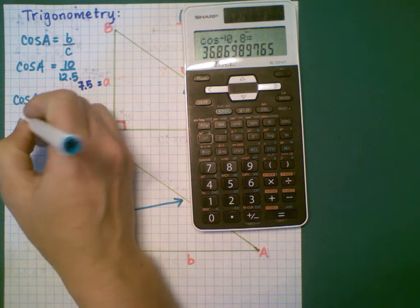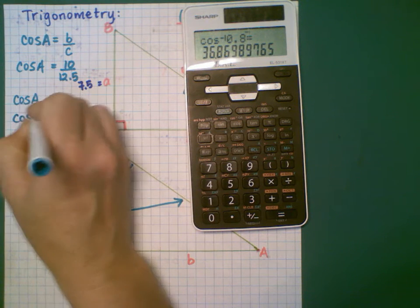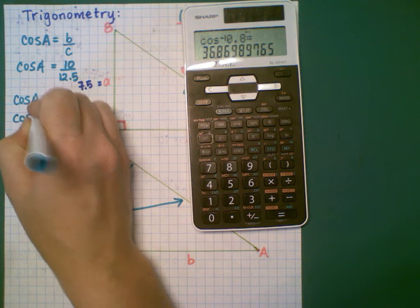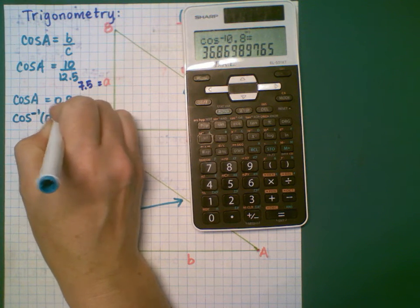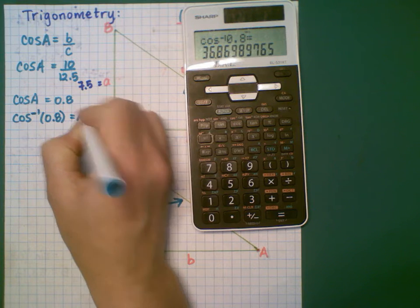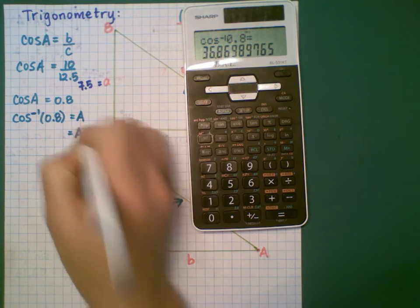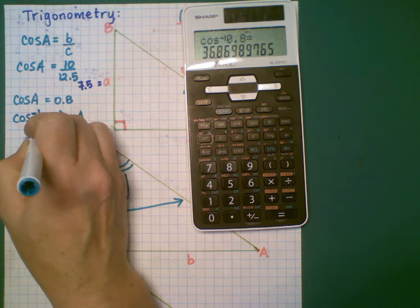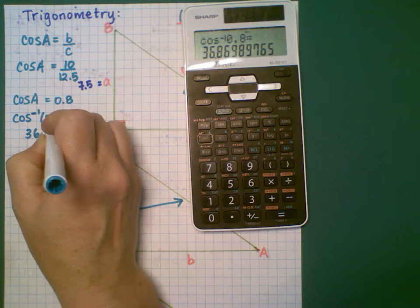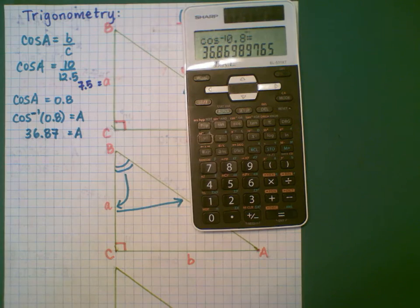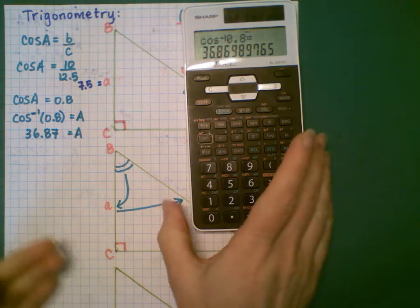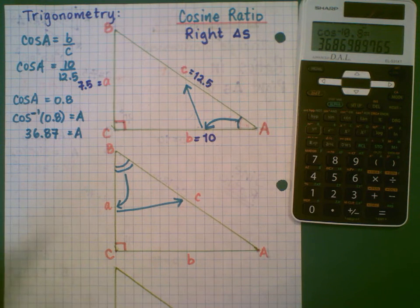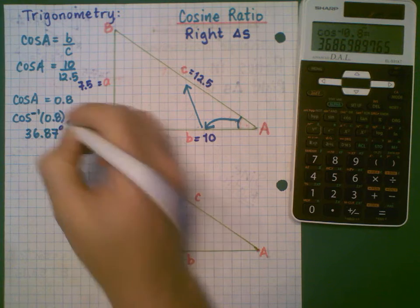And that tells me that angle A is 36.87. I'm rounding to two decimal places. Okay, so it's telling me that that's this angle measure in degrees. I'm going to put a degree sign there.